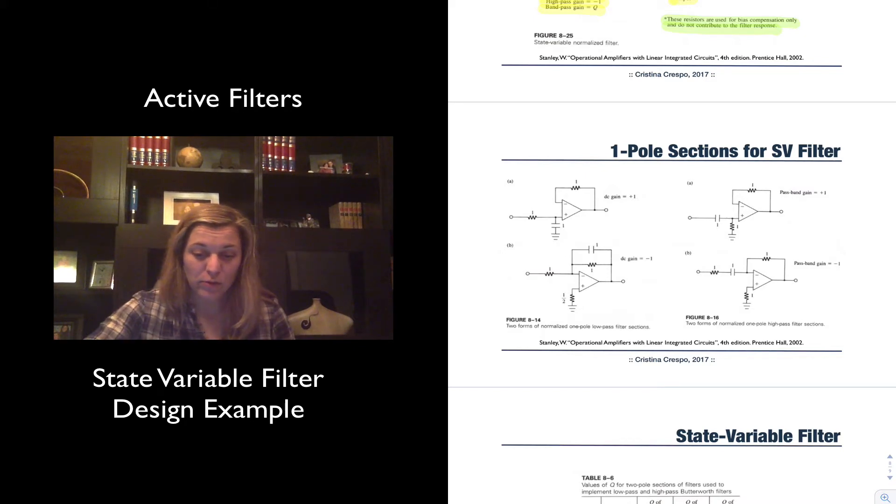So this will be the low-pass filter sections, those will be the high-pass filter sections. I'll notice that you have different ones, the one for the DC gain of plus 1, DC gain of minus 1, passband gain of plus 1, passband gain of minus 1.